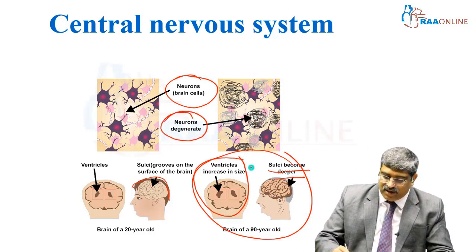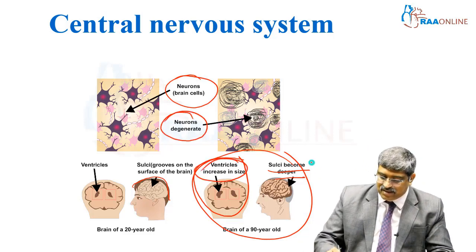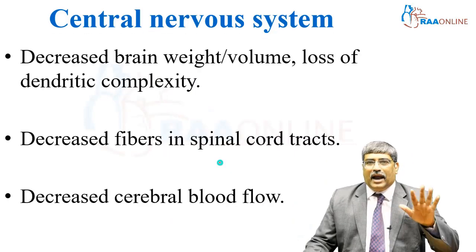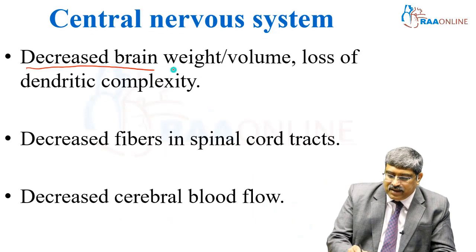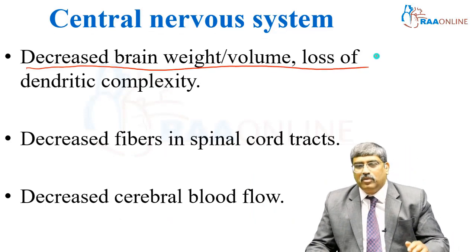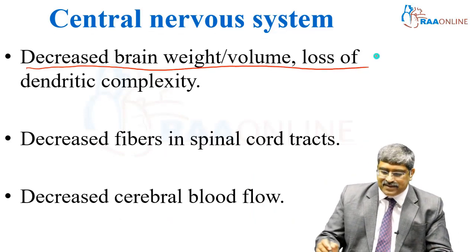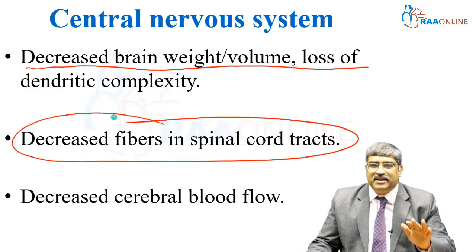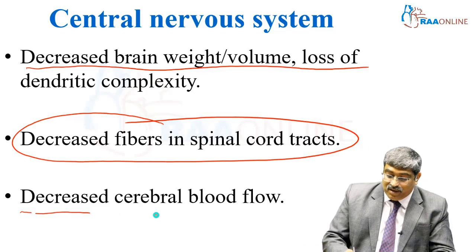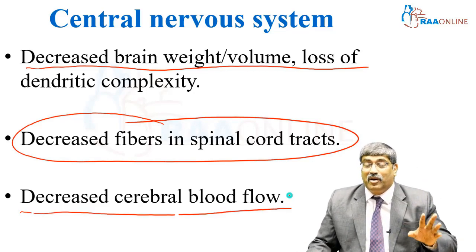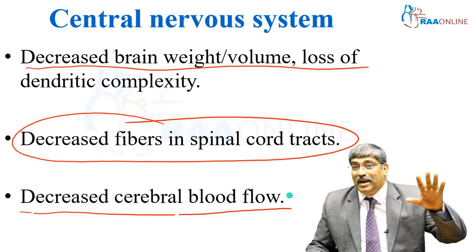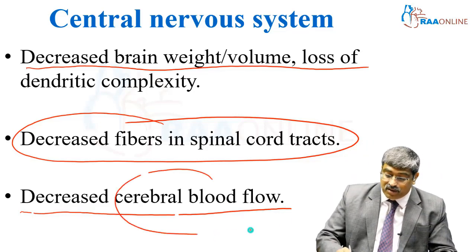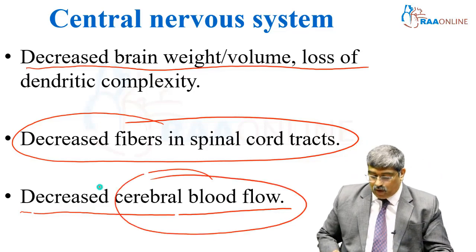The neurons degenerate, the ventricles increase in size, and the sulci become deeper. Apart from that, anatomically there is decreased brain volume, loss of dendritic complexity, decreased fibers in the spinal cord tracts, and decreased cerebral blood flow. One of the main anesthetic concerns is to maintain cerebral blood flow, and this will already be compromised in elderly patients.